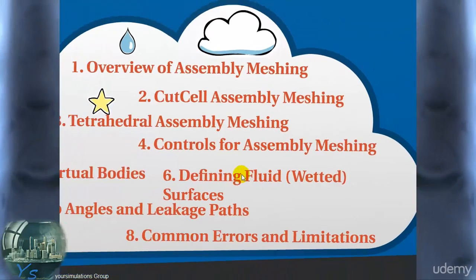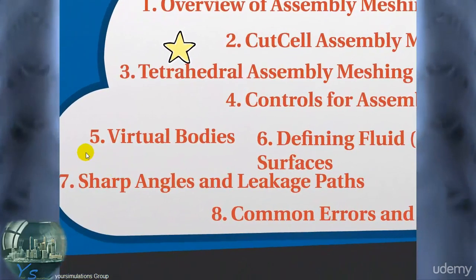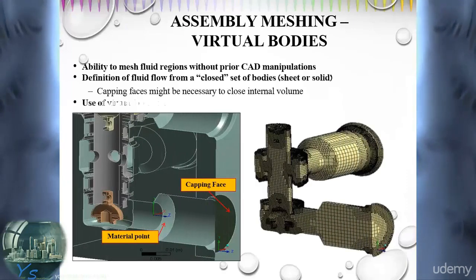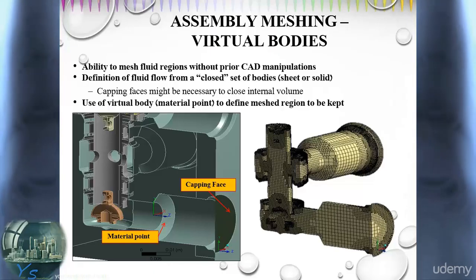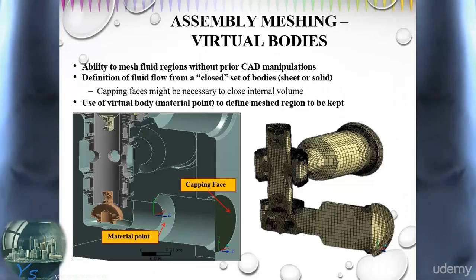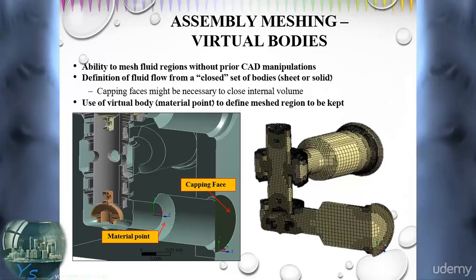It is not necessary to create the actual fluid body as geometry for assembly meshing. We can use virtual bodies to extract the fluid body during the assembly meshing process from a closed set of solid or sheet bodies, or a combination of both, like in this example.